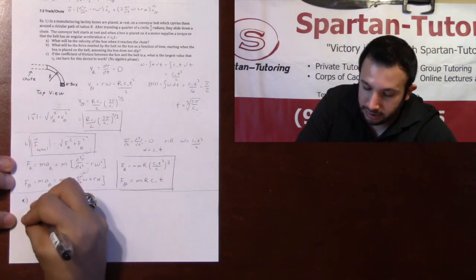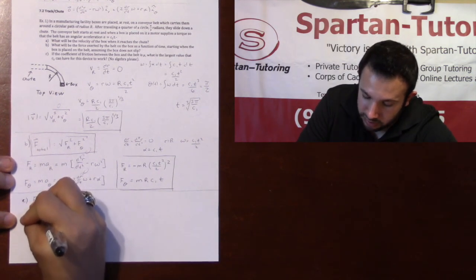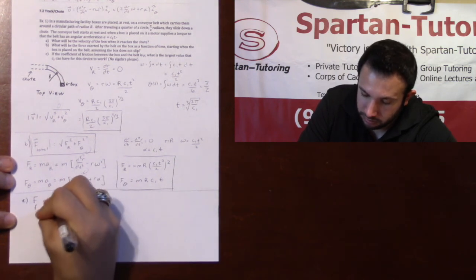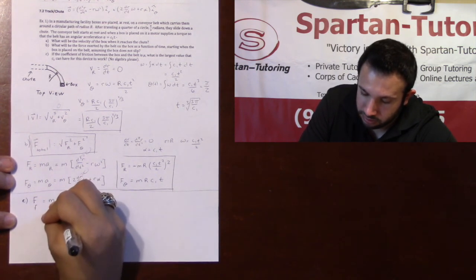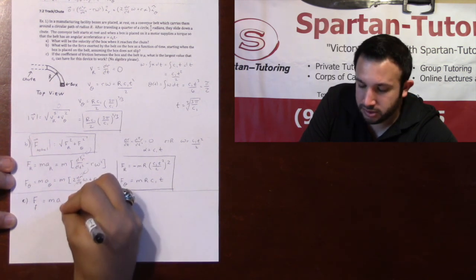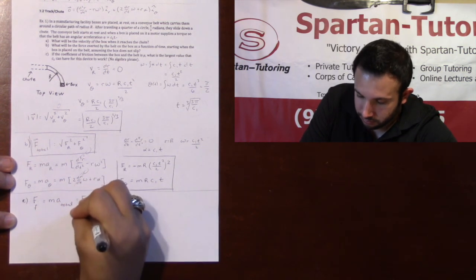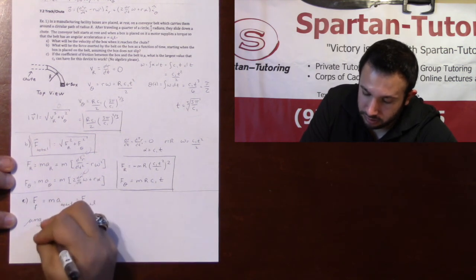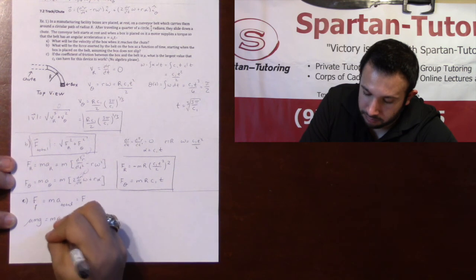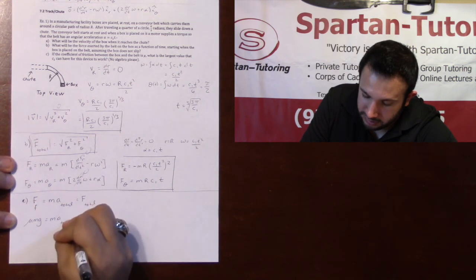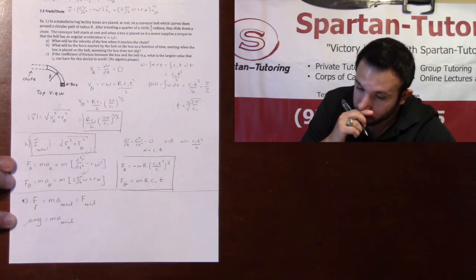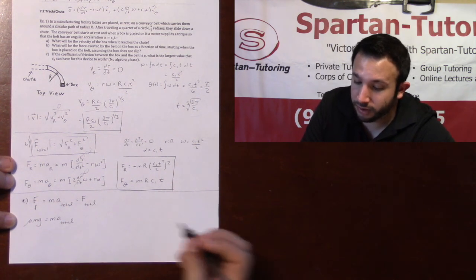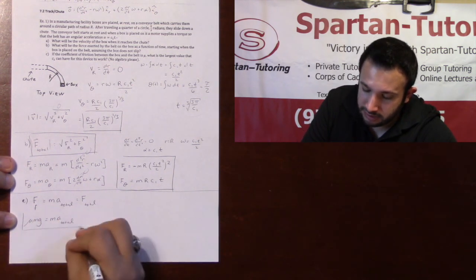What I would need is my force of friction to equal m times a total, which is just f total. Your force of friction is mu mg, which equals m times a total. So I'm going to say this needs to be true.